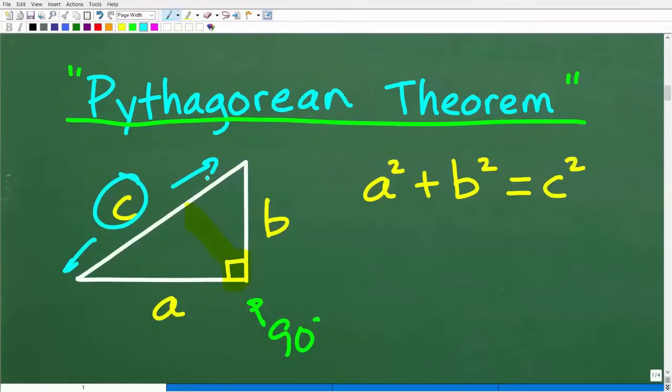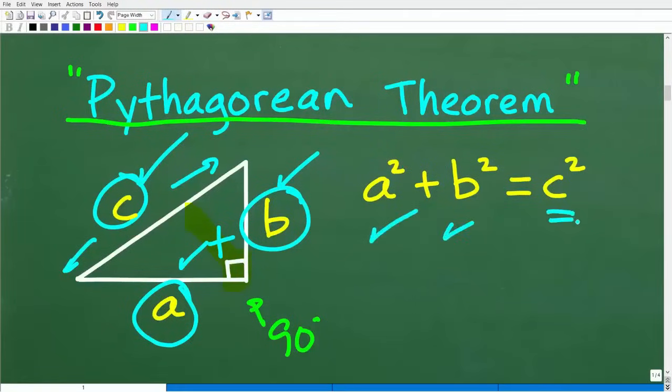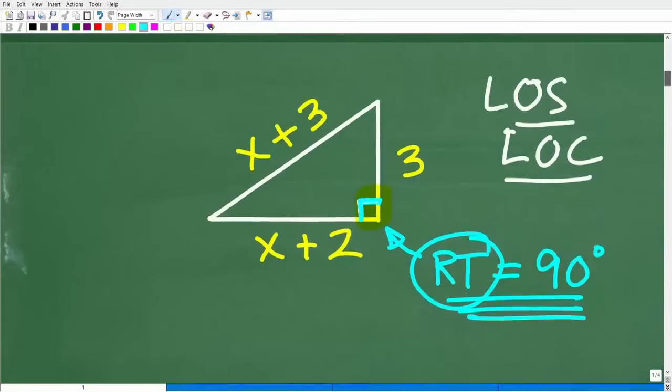What the Pythagorean theorem states is that if we square the shorter sides, so this would be A squared, if we square that and we add it to the square of this other side, that would be B squared, we add these two things up. That's going to be the same as the square of the hypotenuse. So, A squared plus B squared is equal to C squared. And if you have any two values here, we can easily solve for the third.